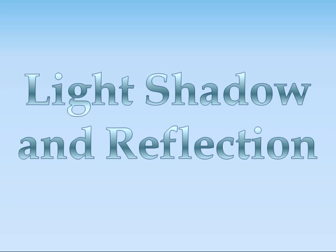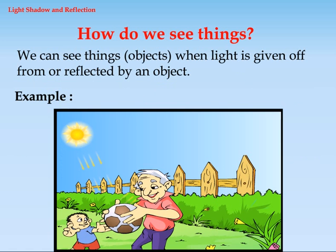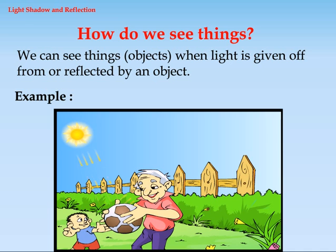Topic: Light, Shadow and Reflection. How do we see things? We can see things, objects, when light is given off from or reflected by an object.